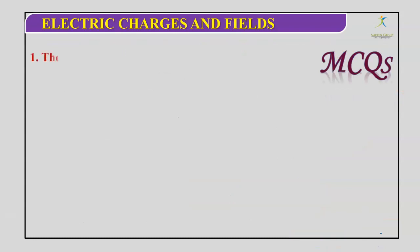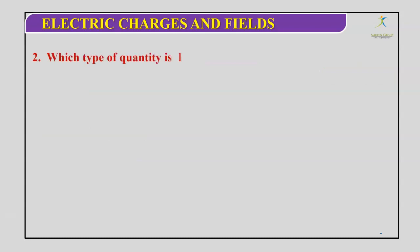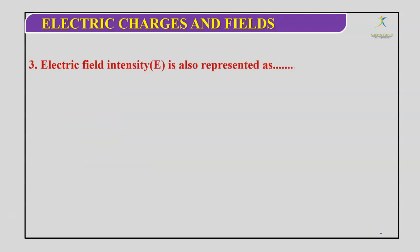Moving to the exam practice part: Question 1 — The unit of electric field intensity is: Newton per Volt, Volt per meter, both A and B, or none of these? The correct answer is both A and B. Question 2 — Which type of quantity is electric field intensity? Scalar, vector, tensor, or none of these? The correct answer is vector. Question 3 — Electric field intensity E is represented as F/e, q/f, e/f, or F/q? The correct answer is D, which is F/q. In this series we covered a few parts of this chapter; later we will discuss more. Take care!